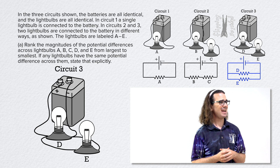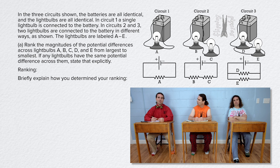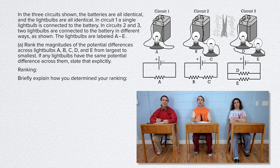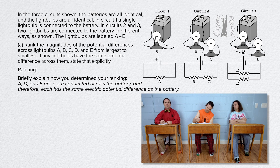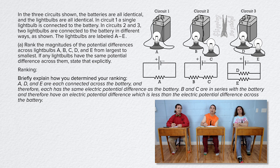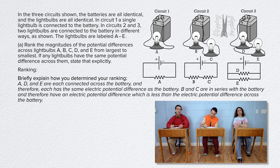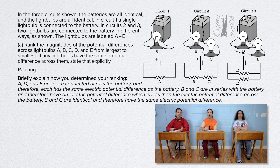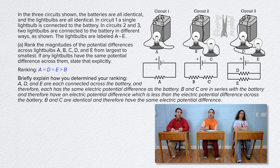Let's start by explaining our ranking. A, D, and E are each connected across the battery and therefore each has the same electric potential difference as the battery. B and C are in series with the battery and therefore have an electric potential difference which is less than the electric potential difference across the battery. B and C are identical and therefore have the same electric potential difference. So our ranking is: A equals D equals E, which are greater than B which equals C.